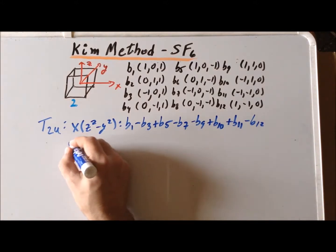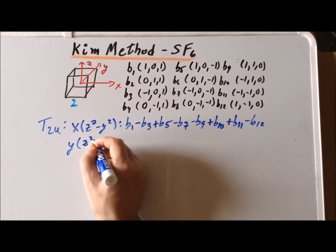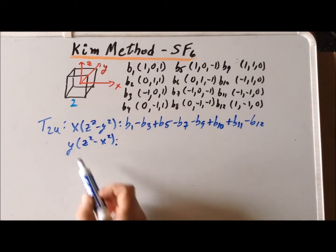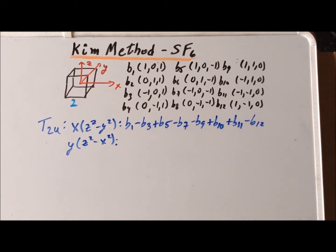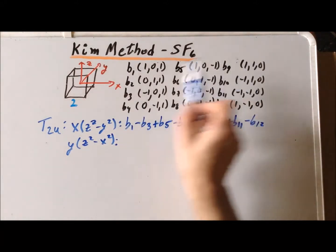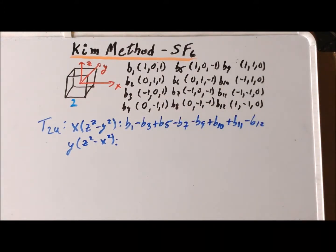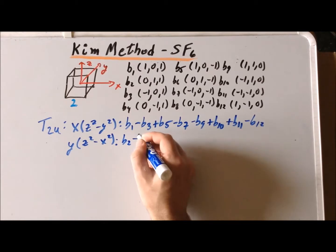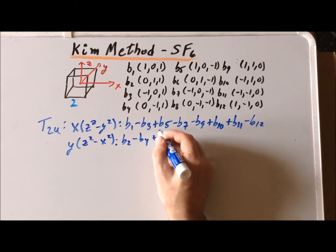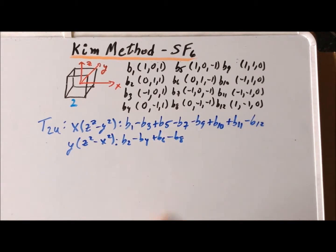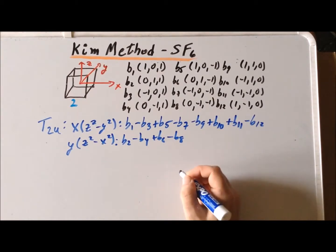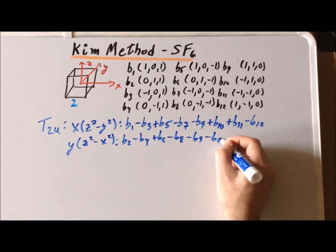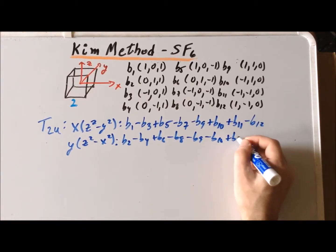Our next basis function is y(z² − x²). We follow the same procedure. Any points where y = 0 make the entire basis function 0 and can be omitted immediately. The result is B2 − B4 + B6 − B8 − B9 − B10 + B11 + B12.